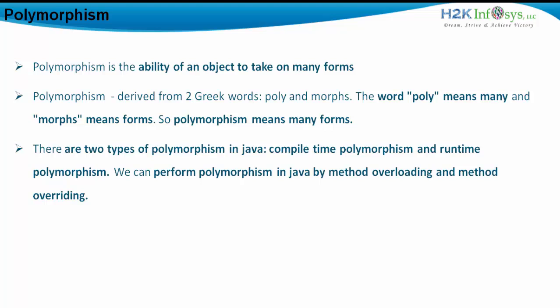There are two types of polymorphism in Java. The first is compile time polymorphism, also known as static polymorphism. The second is runtime polymorphism, also called dynamic polymorphism or dynamic method dispatch. We can perform polymorphism in Java by method overloading and method overriding.